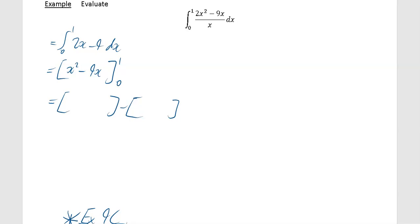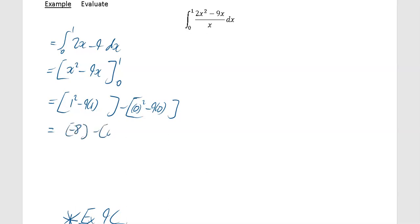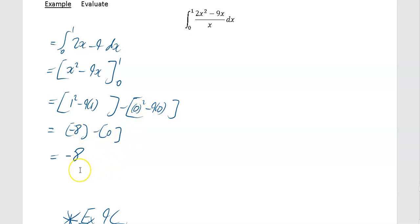Substituting 1 into x squared minus 9x gives 1 squared minus 9 times 1. Substituting 0 gives 0 squared minus 9 times 0, which is just 0. Tidying up the first bracket: 1 squared minus 9 times 1 is minus 8. The second bracket is 0. The final answer is simply minus 8. Once you've integrated, substitute the upper limit into the first bracket and the lower limit into the second, then subtract to get minus 8.